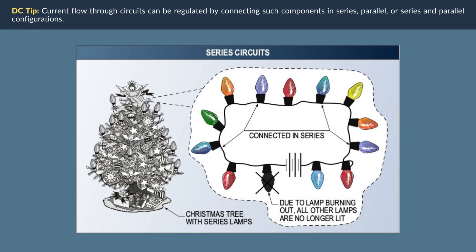There are three general methods for connecting a load in an electrical system. The method used is based upon its condition of use in the circuit. The three general methods are as follows: series, parallel, and series and parallel.